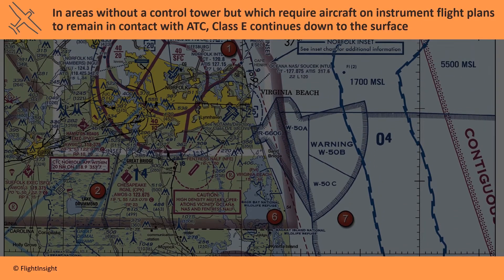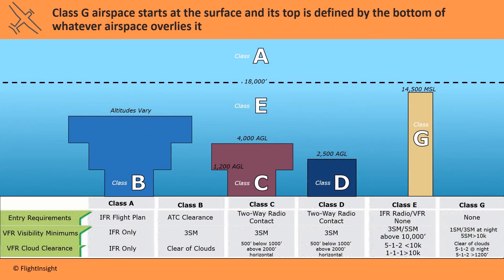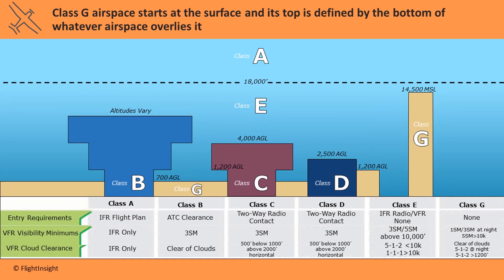Some airports without a control tower will have Class E extend all the way to the surface, with no G airspace above it at all. This is to protect aircraft on instrument approaches all the way down to the runway, so it's depicted by a magenta segmented circle. Class G airspace starts at the ground, and its top is defined by the bottom of whatever airspace is above it — sometimes 1,200 feet, 700 feet, other altitudes, or sometimes there's no Class G at all. You won't see Class G going above 14,500 MSL, and the last places where it goes that high can only be found in Alaska now.